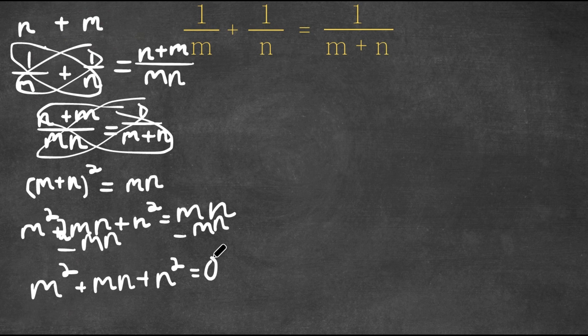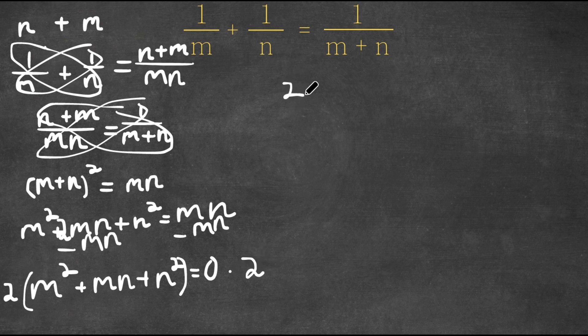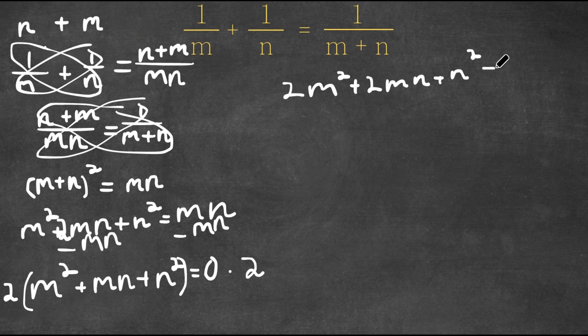Now I'm actually going to multiply both sides by 2. So we have 2 times m squared plus m n plus n squared is equal to 0 times 2. Now if we distribute the 2, we get 2 m squared plus 2 m n plus 2 n squared is equal to 0.